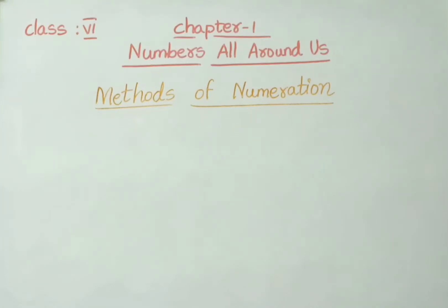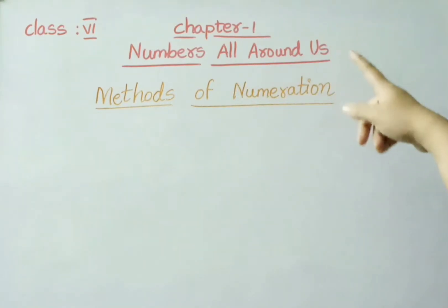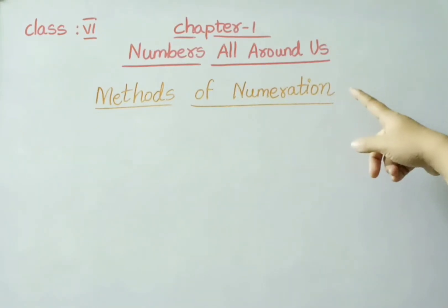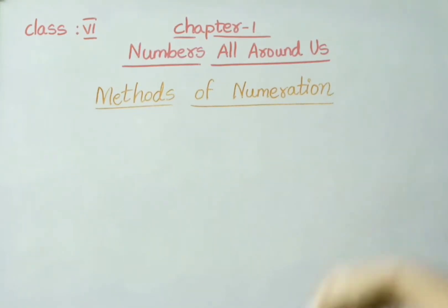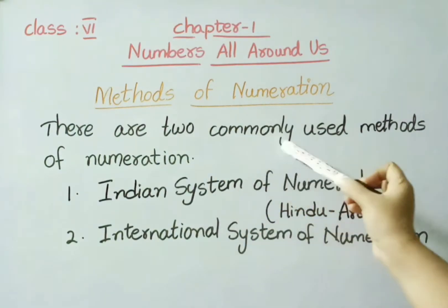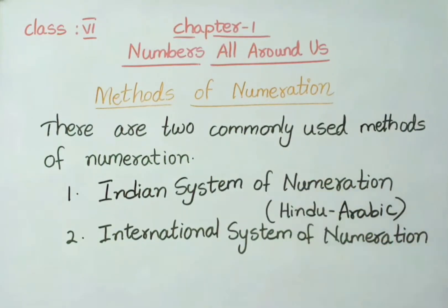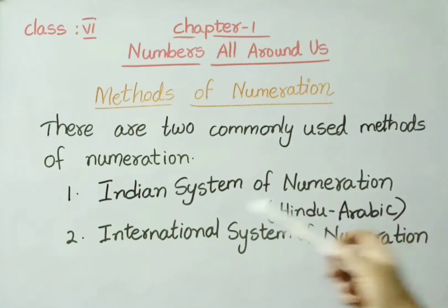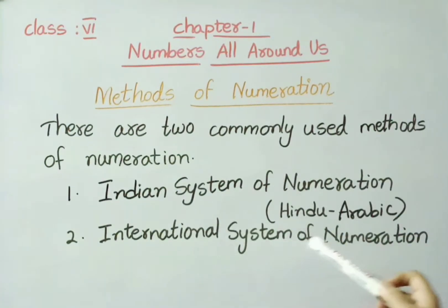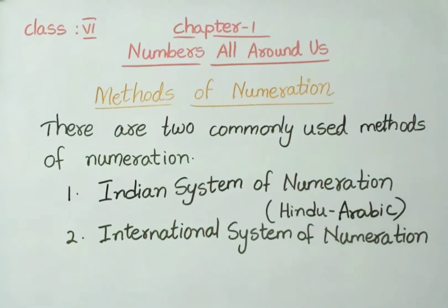Hello everyone, welcome to our channel. Today I am going to explain classics chapter 1: Numbers All Around Us — Methods of Numeration. There are two commonly used methods of numeration: the first one is the Indian system of numeration or Hindu-Arabic system, and the second one is the international system of numeration. Today let us learn about the Indian system of numeration.